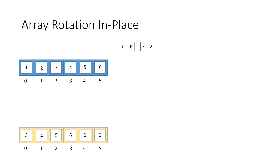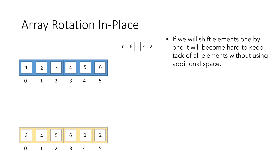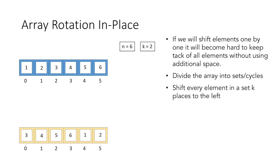But if we do that it becomes hard to keep track of all elements without using additional space. Instead, what we will do is divide the array into sets or cycles and shift every element in a set k places to the left. When done with the first set, we move to the next set and repeat the process.